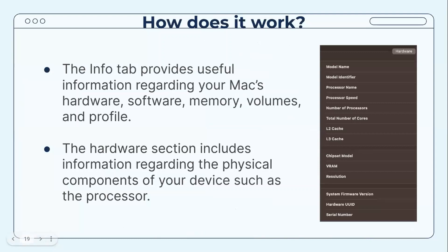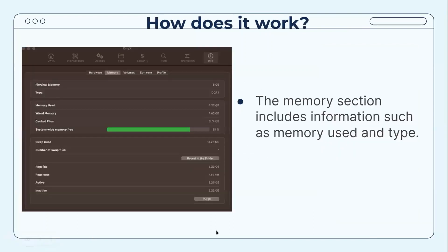The Info tab provides useful information regarding your Mac's hardware, software, memory, volumes, and profile. The Hardware section includes information about the physical components of your device such as the processor, chipset model, VRAM, resolution, and serial number. The Memory section includes information such as the amount of memory used and free, memory type, physical memory, and the number of swap files.